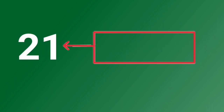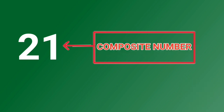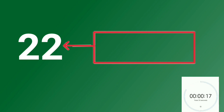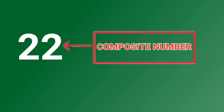How about this? 21 has more than two factors. Therefore, it is a composite number. 22 has more than two factors. Therefore, it is a composite number.